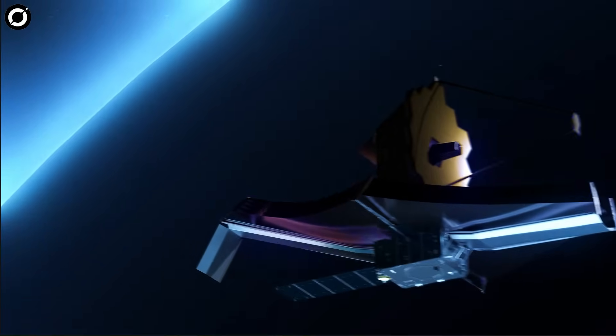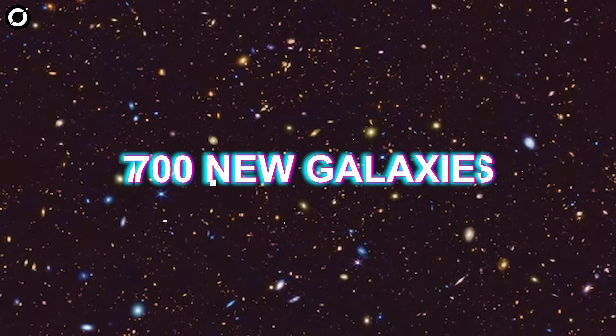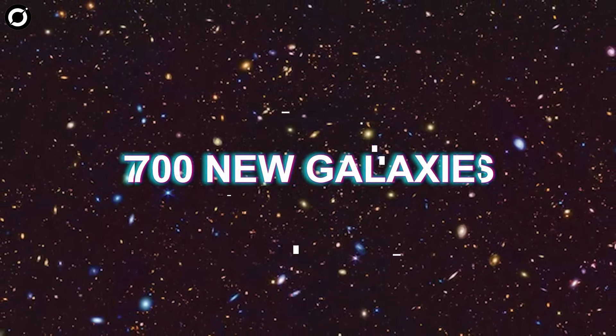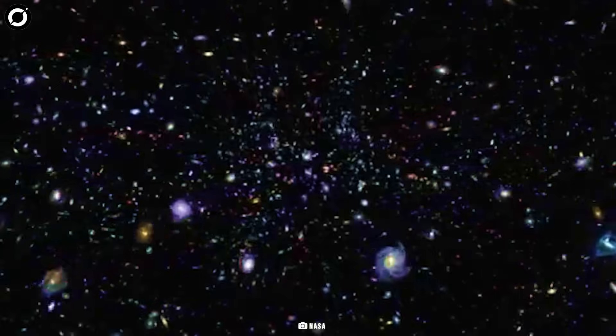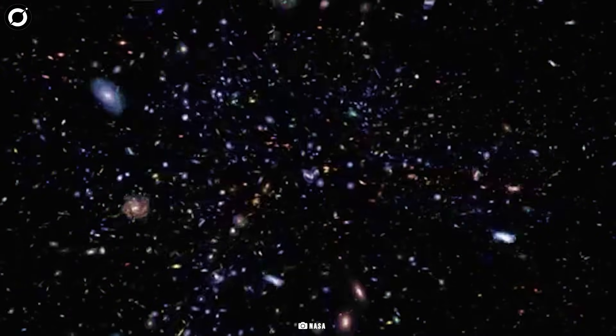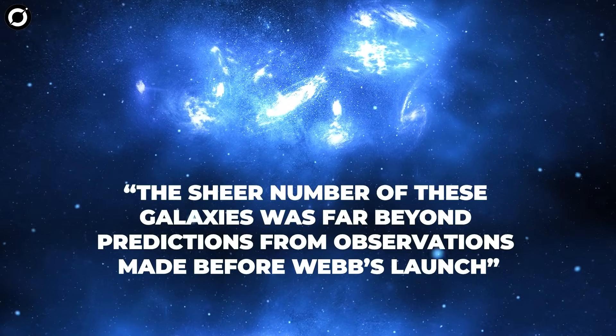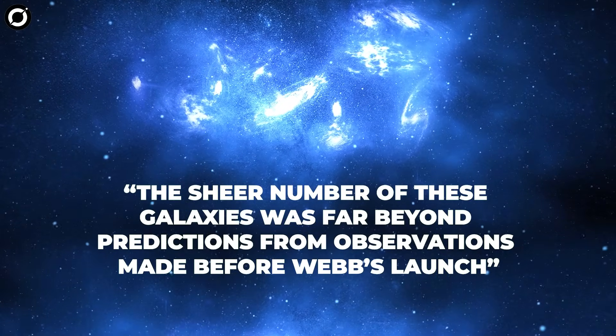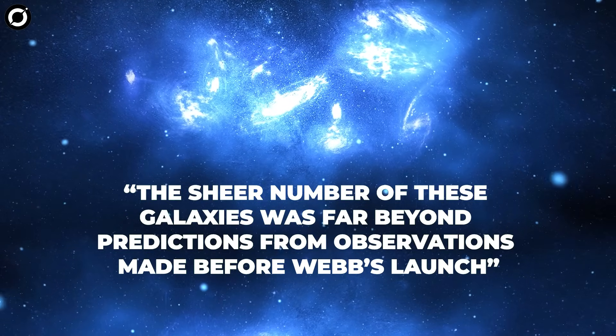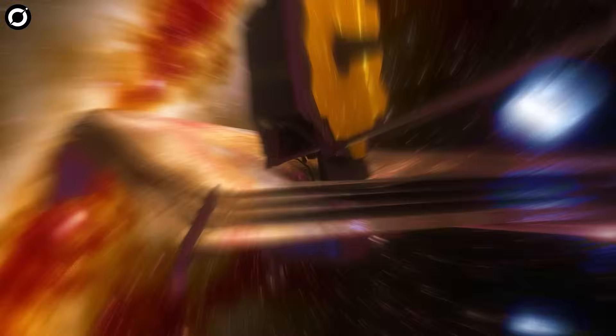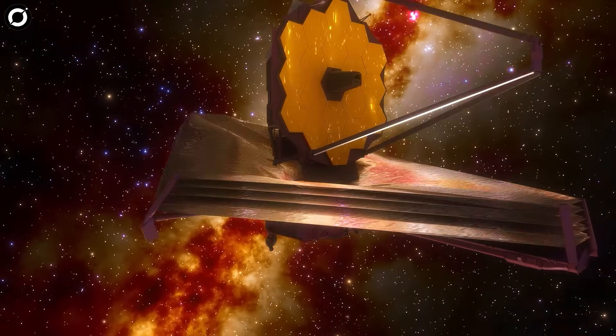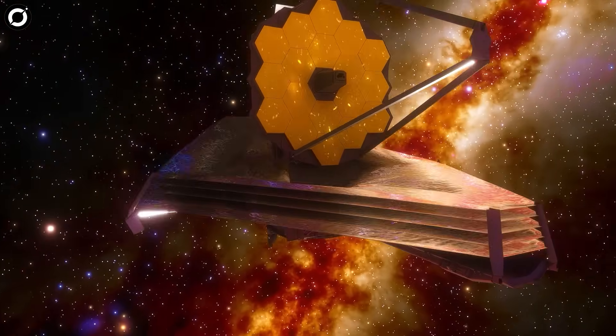And James Webb didn't stop there. JWST also discovered about 700 new galaxies in GOODS. What's more, these never-before-seen galaxies are some of the youngest ever observed, dating back to between 370 million and 650 million years after the Big Bang. The sheer number of these galaxies was far beyond predictions from observations made before Webb's launch, the Space Telescope Science Institute said in a statement. With hundreds more galaxies to study in unprecedented detail thanks to JWST, astronomers are learning that galaxies in our early universe were more turbulent than previously thought.